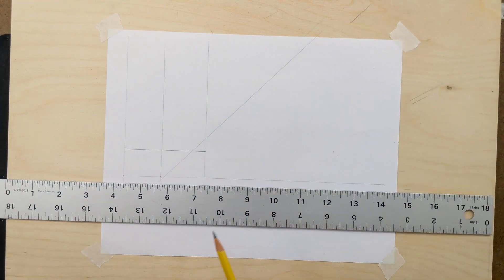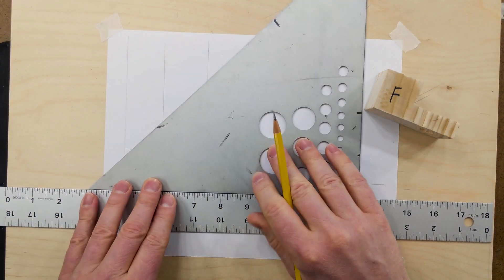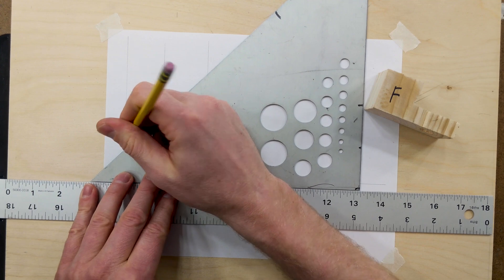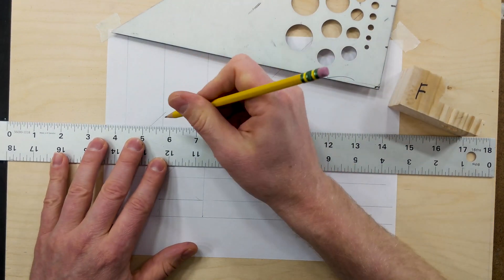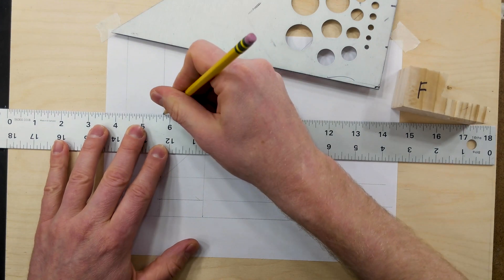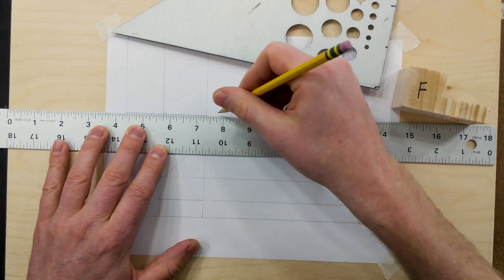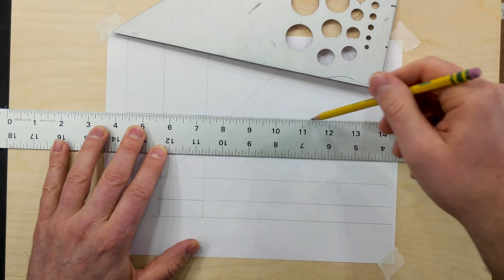And then we know that we're one unit up, so that should still be that 37.3. So we can just go ahead and draw a diagonal line. And then we can draw a horizontal line right here. Let me go ahead and draw that across.